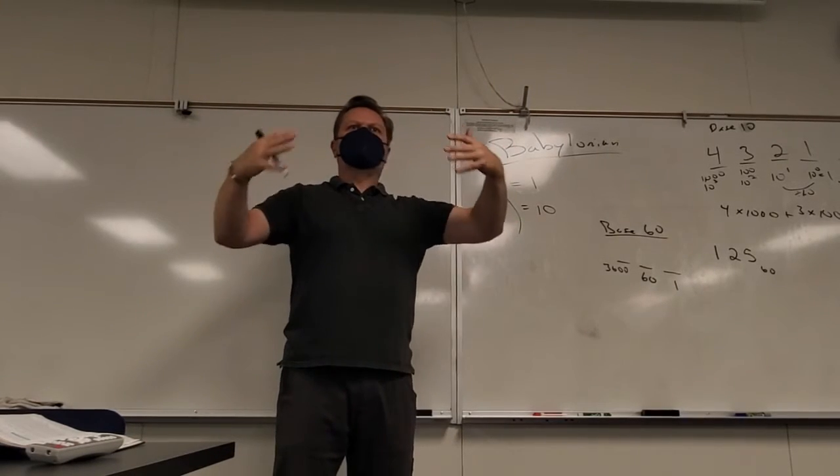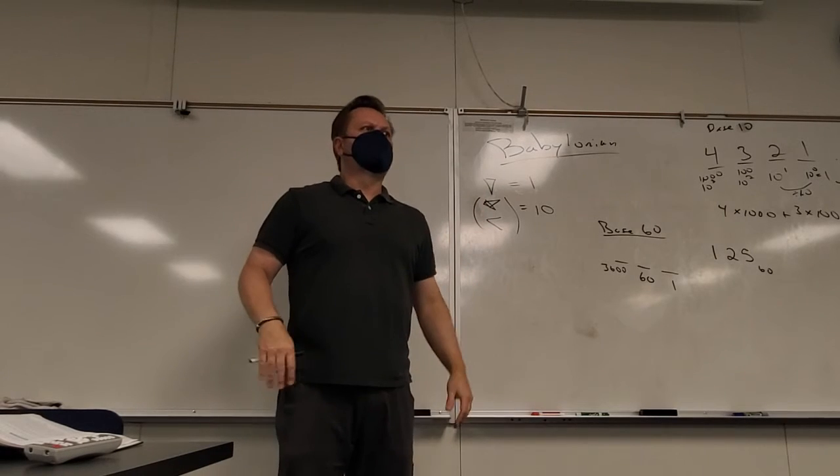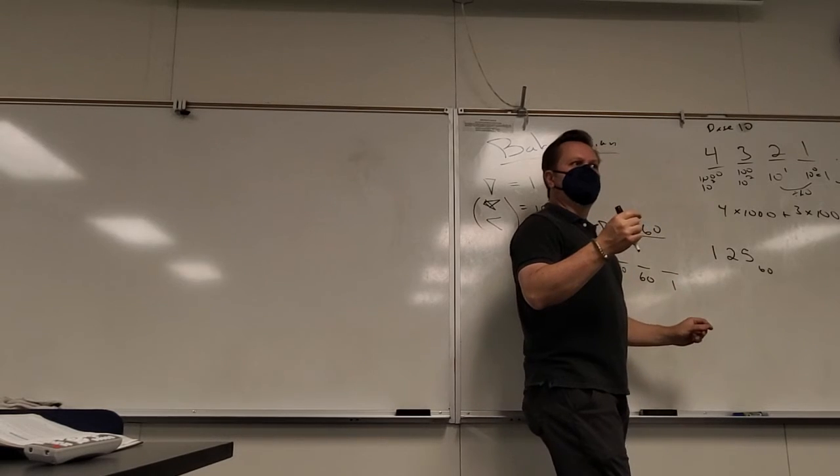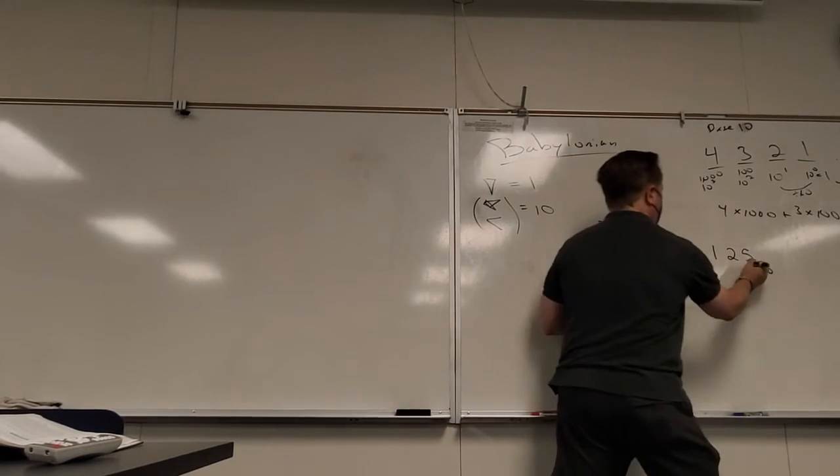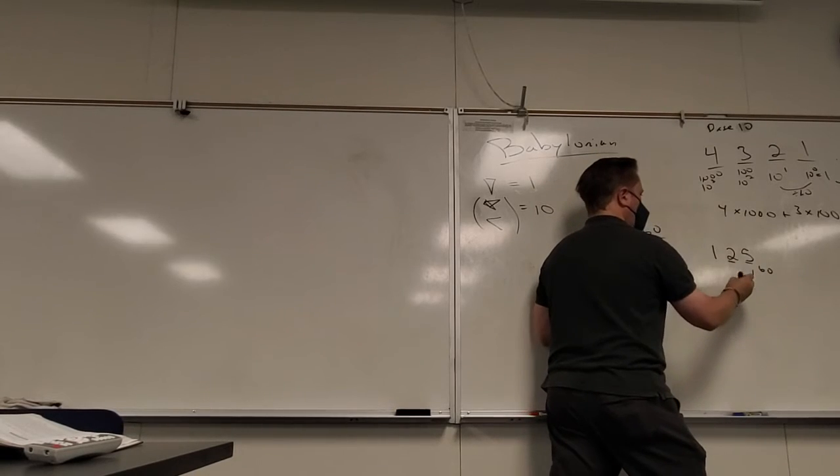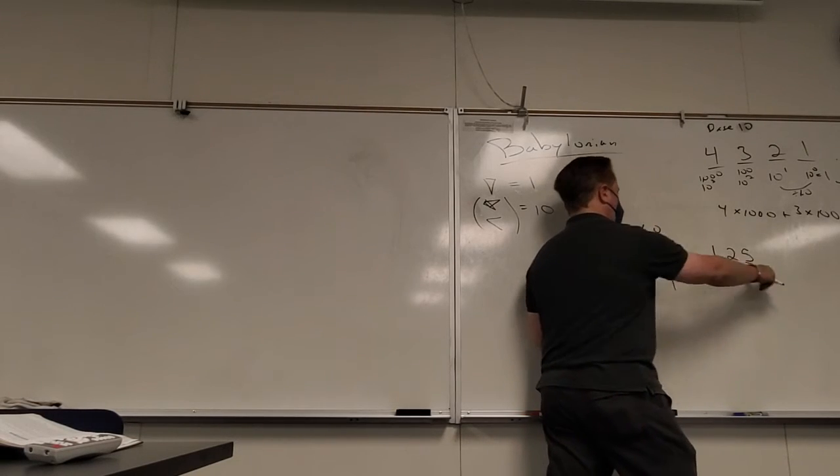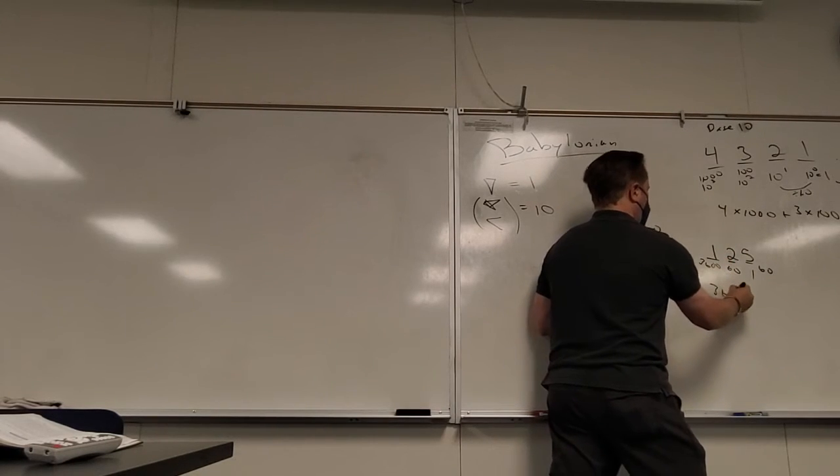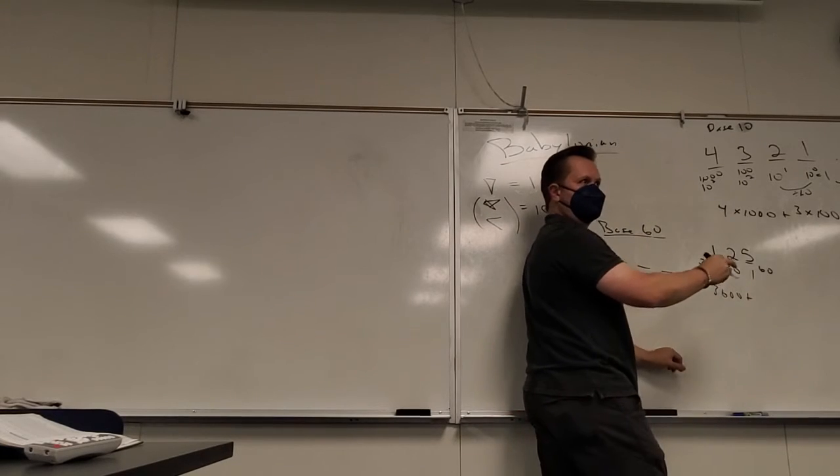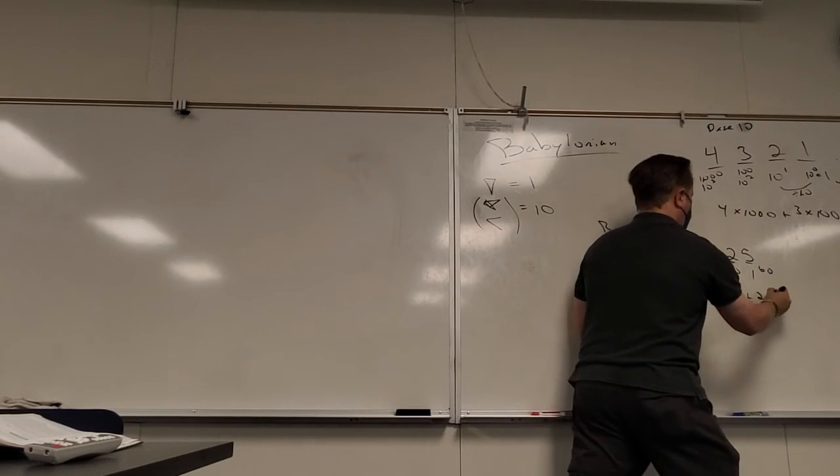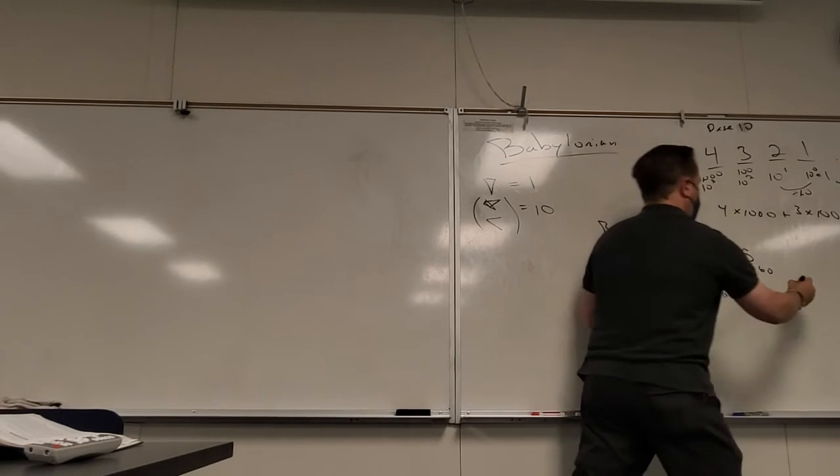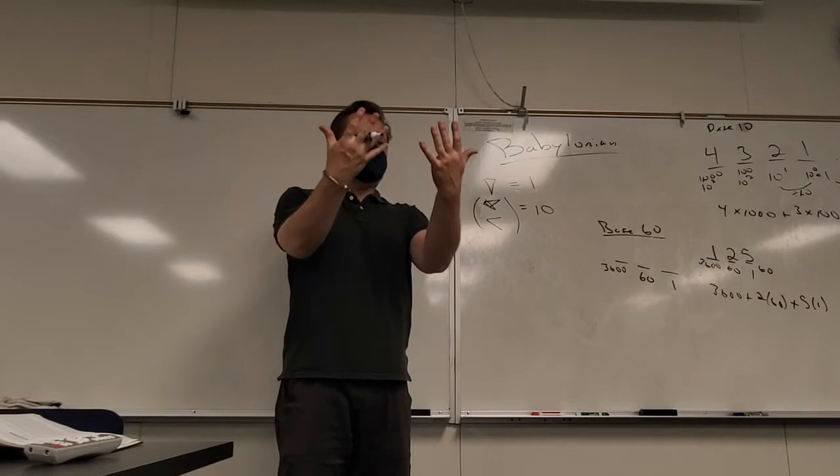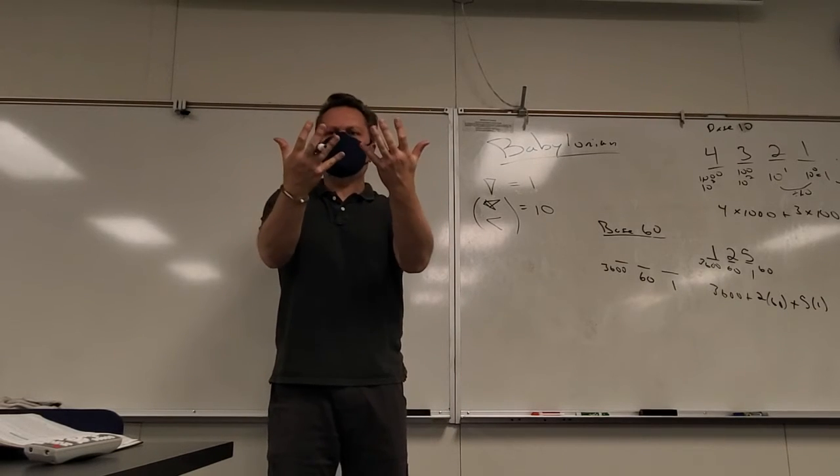What's this place represent? Our system is base ten. First place is one. Why is the next place ten? Because it's base ten, so every step I take is a factor of ten. This is base 60. So what's this place mean? Sixty. What would this place mean then? Thirty-six hundred. Every step you take is times sixty.